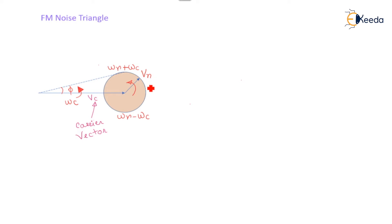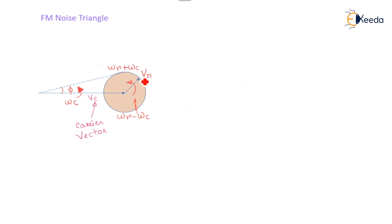The noise vector Vn is superimposed on the carrier vector and it is rotating at a relative angular velocity of (ωn minus ωc). Due to this, the amplitude and the phase of the carrier will change. The maximum deviation in the amplitude takes place when the Vn vector reaches a particular position, and the maximum deviation in the phase is also observed at that point.